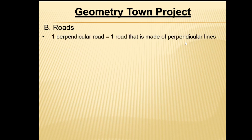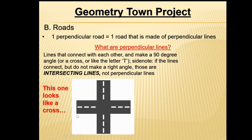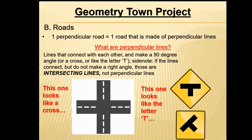Next, let's talk about the one perpendicular road — one road made of perpendicular lines. Perpendicular lines connect with each other and make a 90-degree angle, like a cross or the letter T. A side note: if the lines connect but don't make a right angle, those are intersecting lines, not perpendicular lines. So make sure your perpendicular road isn't just roads that are crossing, but roads that make a 90-degree angle. You can see the 90-degree angles in the cross example, and also in the T-shaped example — same road, just turned in a different direction.